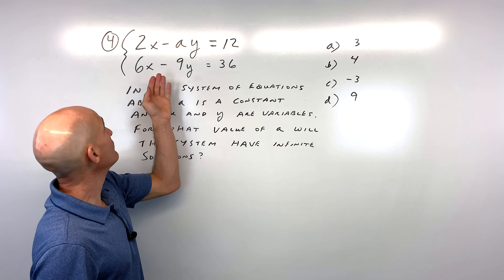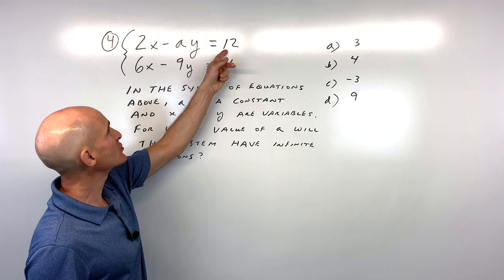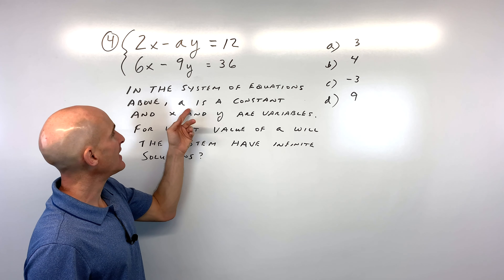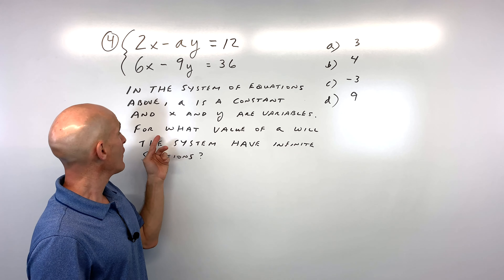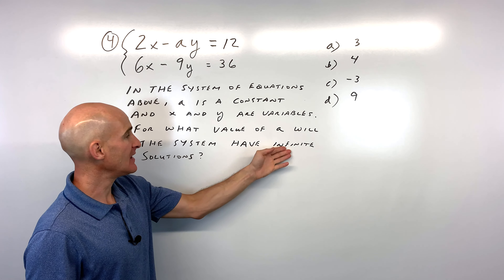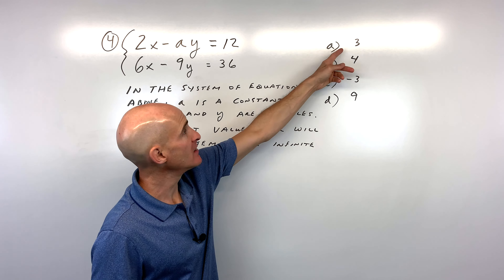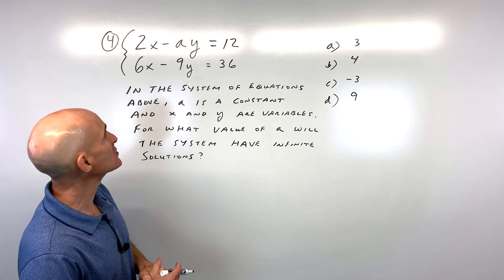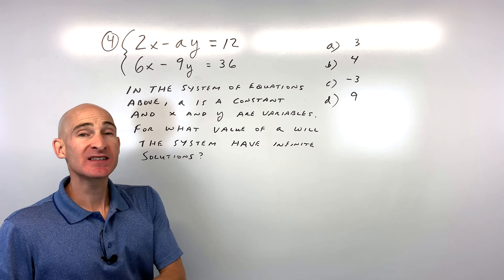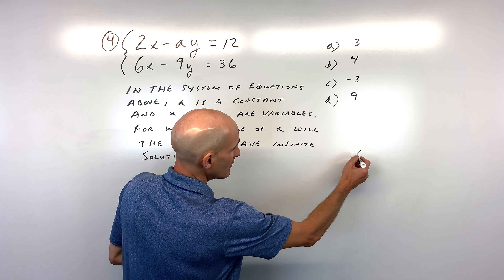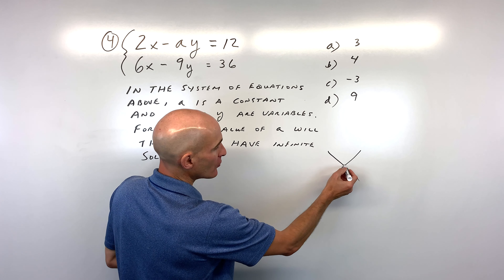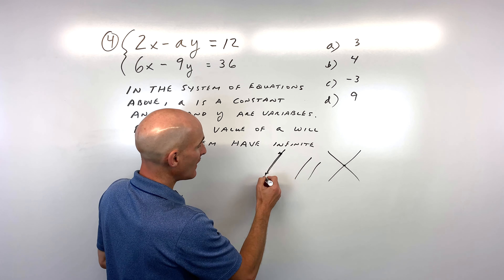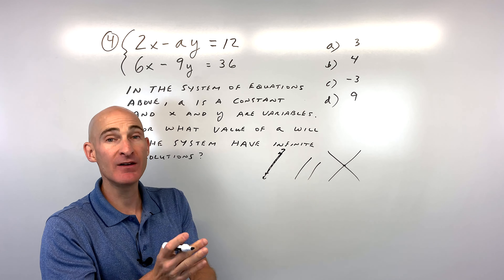Number four: 2x minus ay equals 12; 6x minus 9y equals 36. In the system above, a is a constant and x and y are variables. For what value of a will the system have infinite solutions? What they're testing is systems of equations — do the lines cross at one point, are they parallel with no solution, or are they the exact same line giving infinitely many solutions?